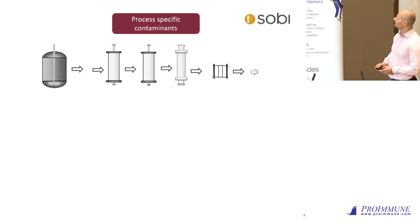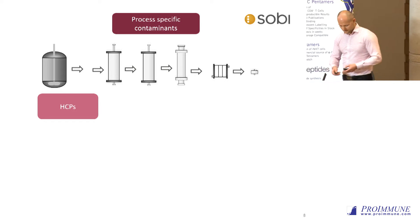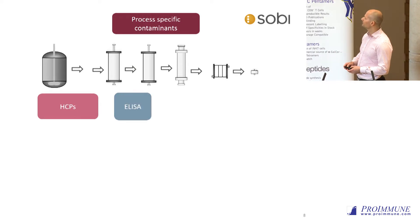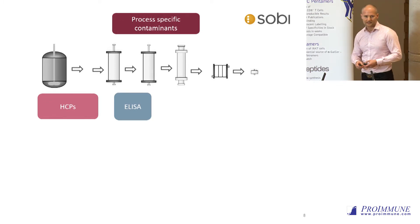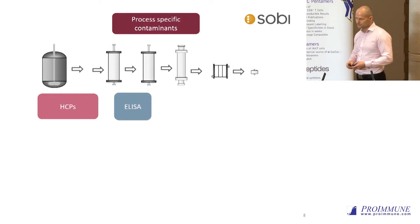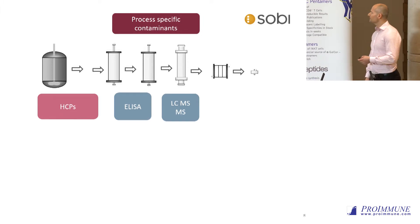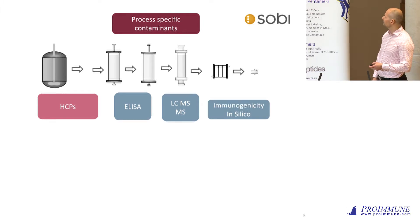Starting with the process-specific contaminants: we have potential contamination with host cell proteins, and these are produced in E. coli. We look using generic ELISAs for host cell proteins, and sometimes develop specific assays if we identify a few very problematic HCPs that are co-purified with our proteins. We identify all the HCPs with LC-MS/MS, and we sometimes do in silico immunogenicity assessment to see if the HCPs are especially immunogenic.